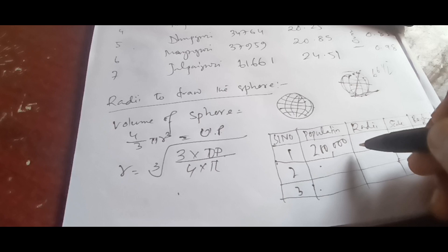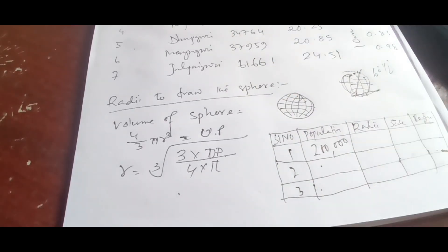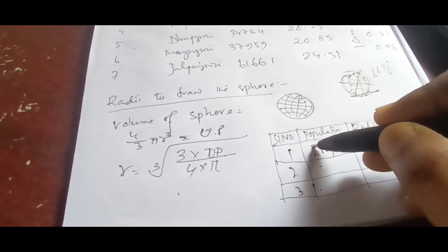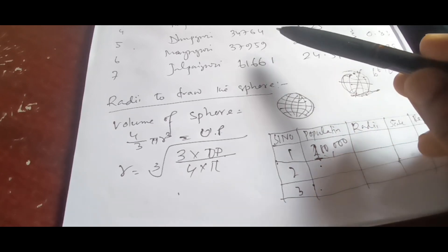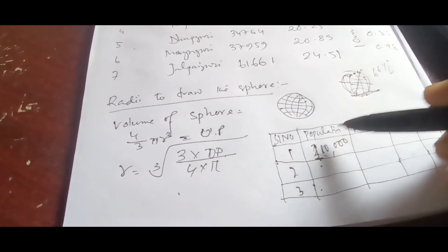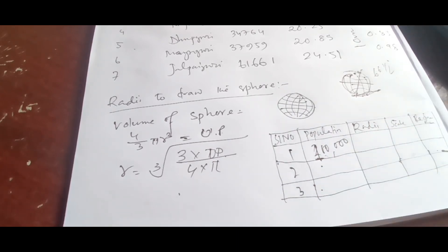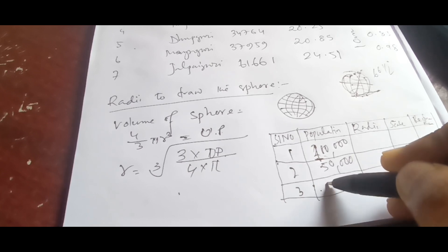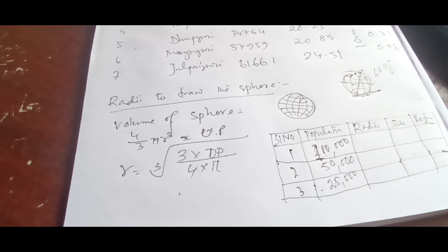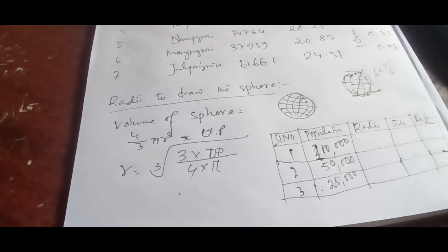But see, if you take two lakh then if I half it, it is coming one lakh, and then it is coming fifty thousand. Majority of the spheres are going out. So in that case I'll suggest you not to take two lakh, take one lakh eighty thousand. It will better represent because the least population present here is ten thousand also. It should be a scale which represents the numbers present or the population present in the cartogram. So one lakh, fifty thousand, and twenty five thousand. In this way we have to draw.